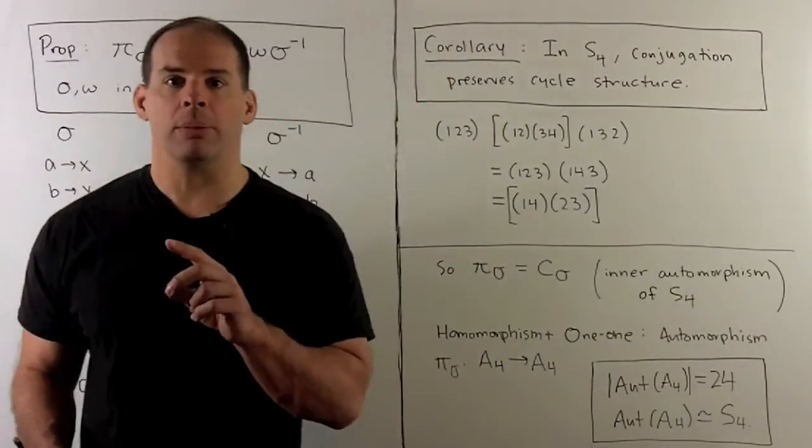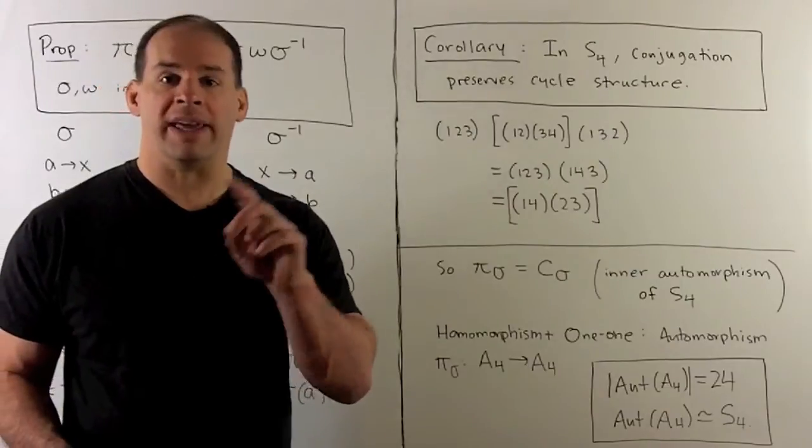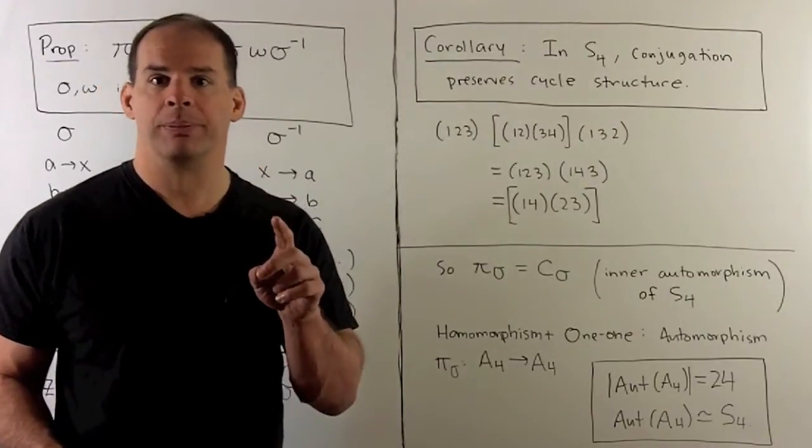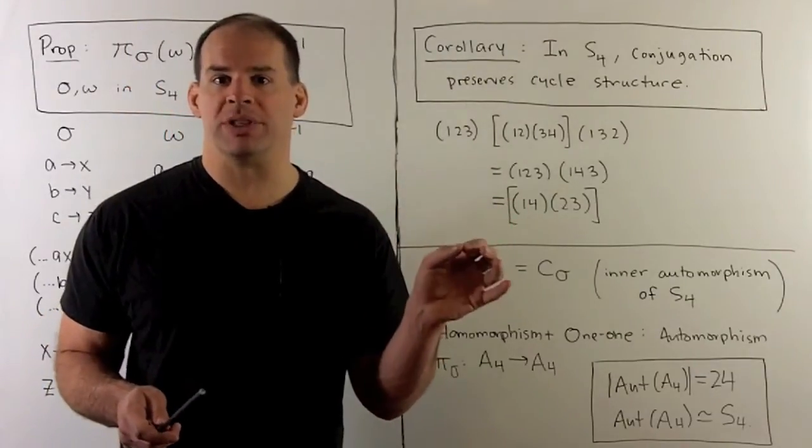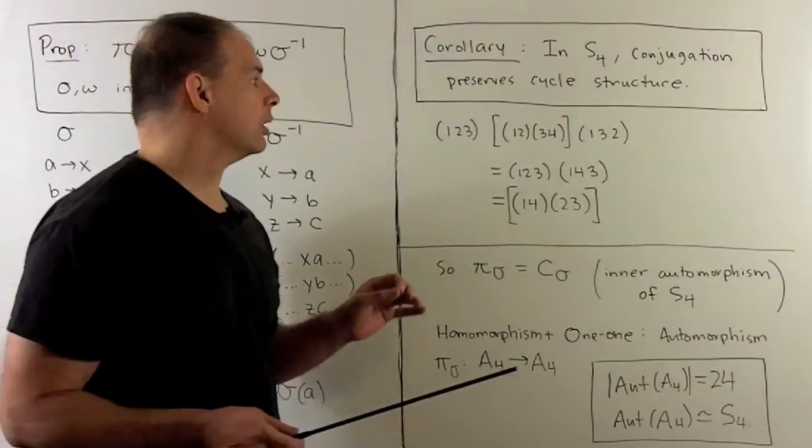Corollary of this result: in S4 or any S_n, conjugation preserves cycle structure. We're not changing the lengths of any of the cycles that show up in the permutation, we're just changing the labels when we conjugate.